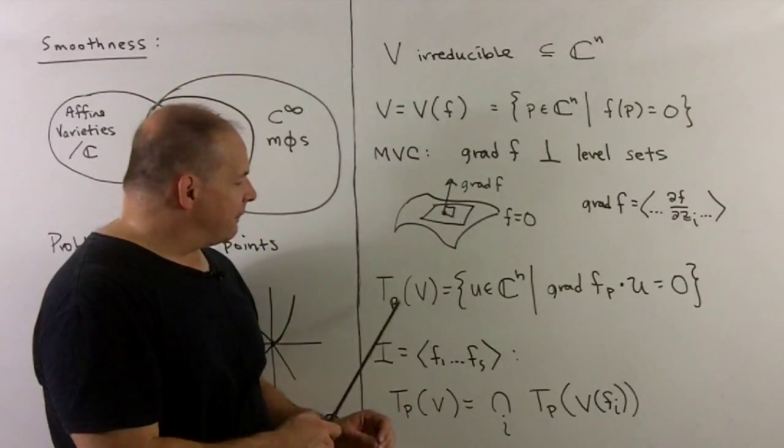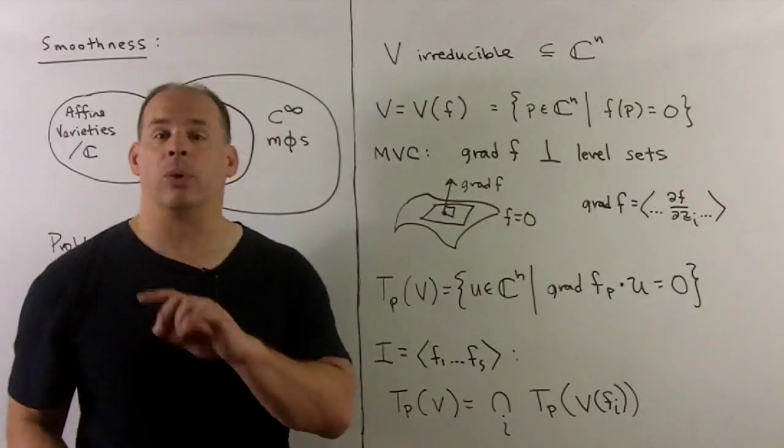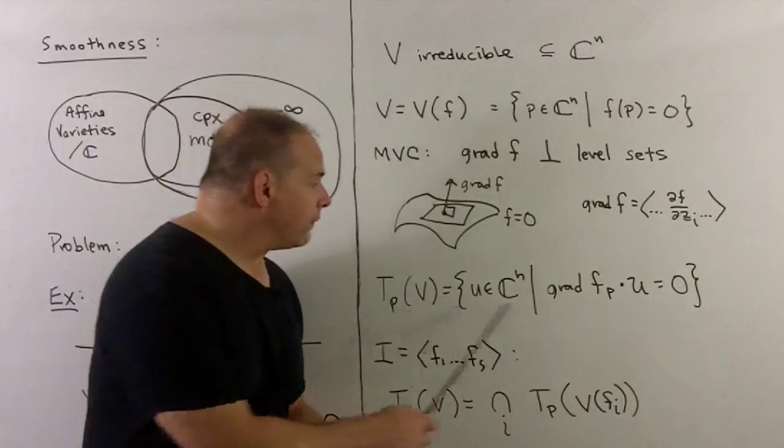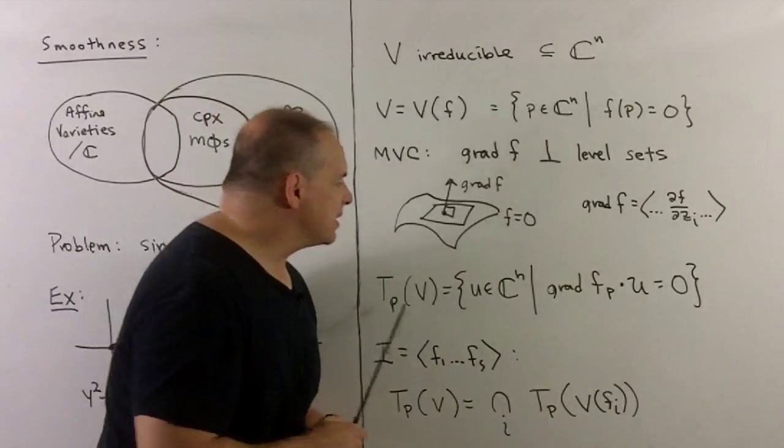That gives us our first definition of the tangent space. If we're in the complex category, we're talking about holomorphic tangent vectors. That's what we get when we have a single polynomial.